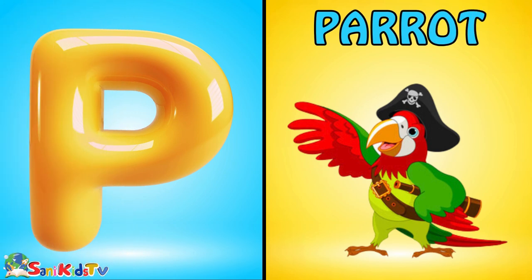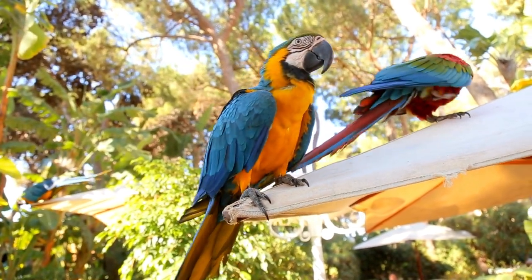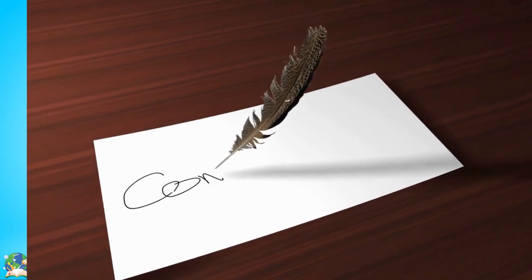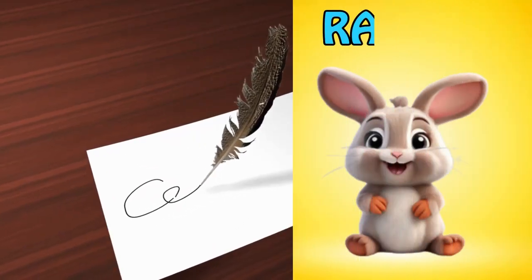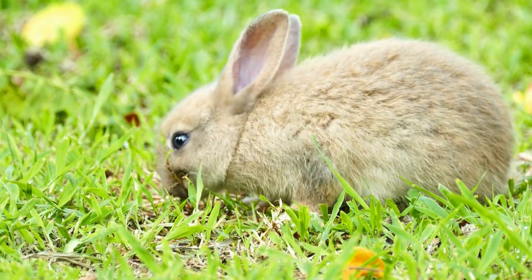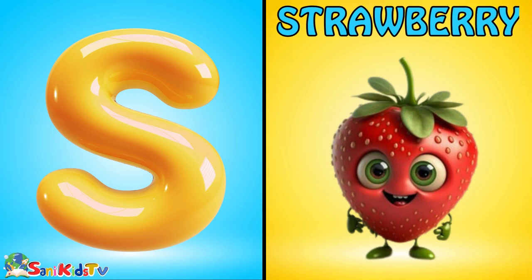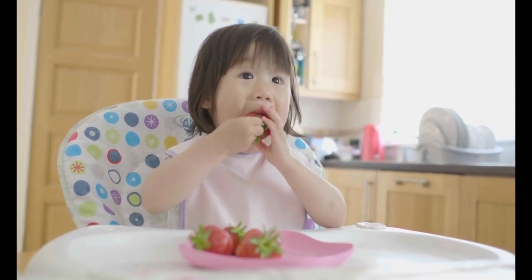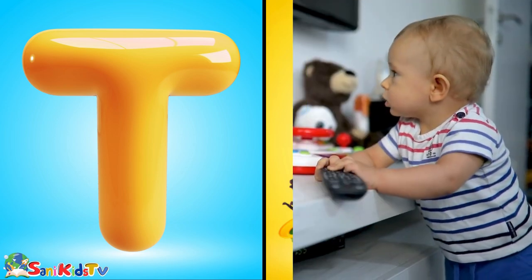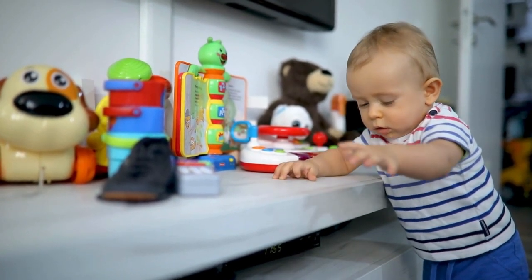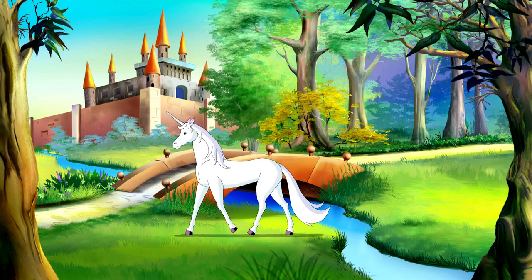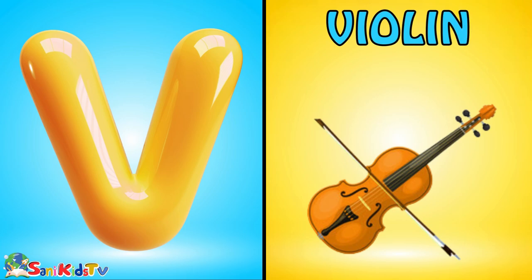P for Parrot. S for Strawberry. T for Toys. U for Unicorn. V for Violet.